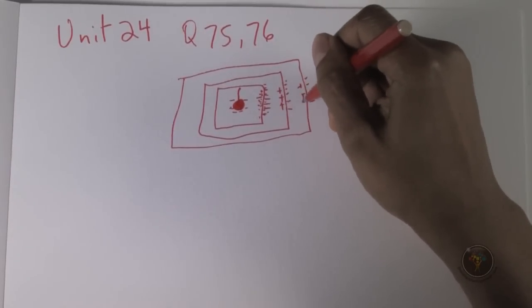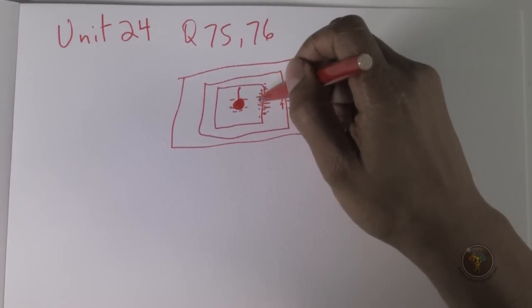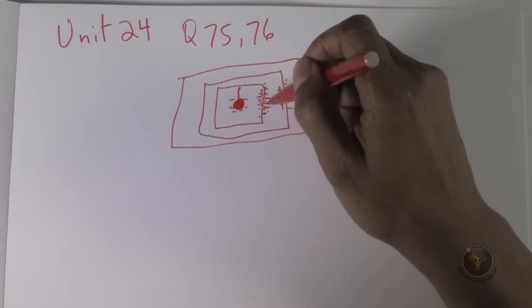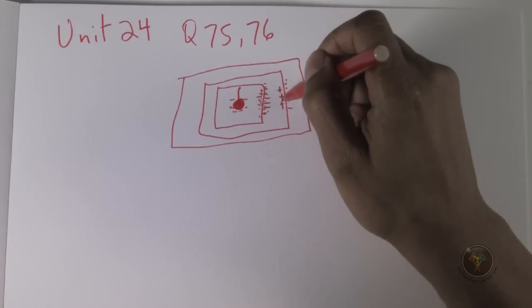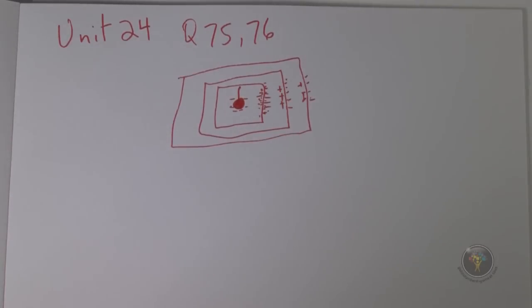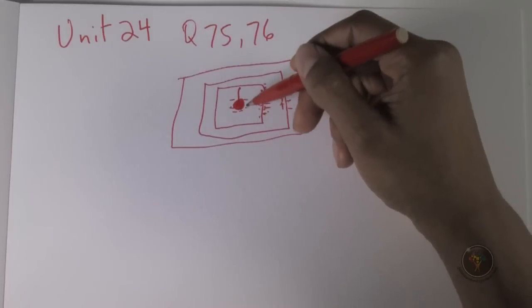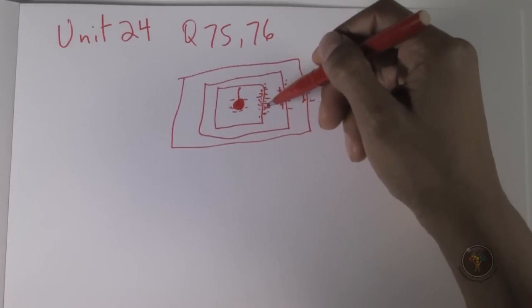And so whatever the charge that you presented here, minus Q, you're going to end up with plus Q on the inside, minus Q on the outside, plus Q, minus Q, plus Q, and that will just go on and on, domino effect, no matter how many layers that you have. So question 75, the induced charge on the outer surface of the smallest sphere is equal to minus Q, because that was the charge that pushed it there.